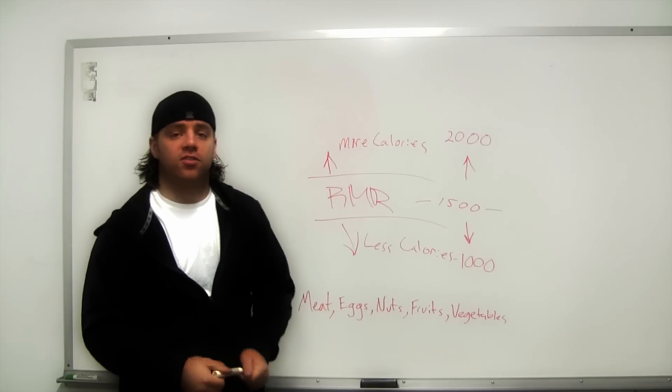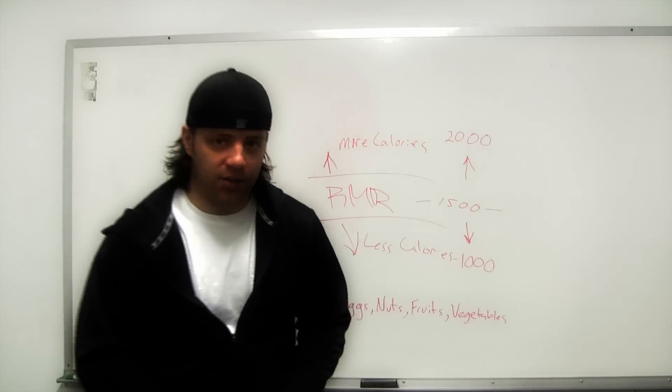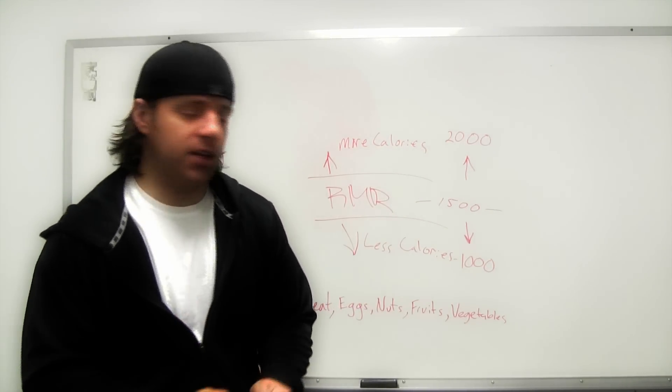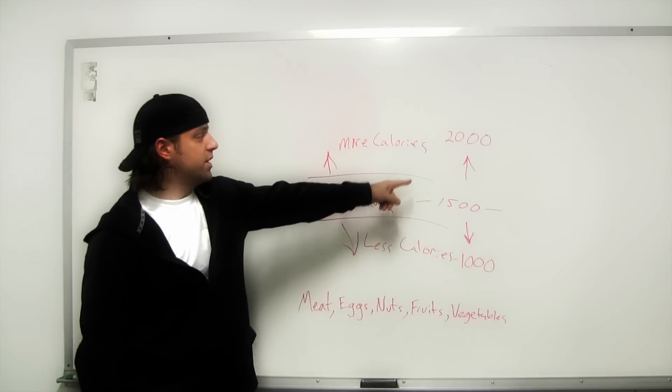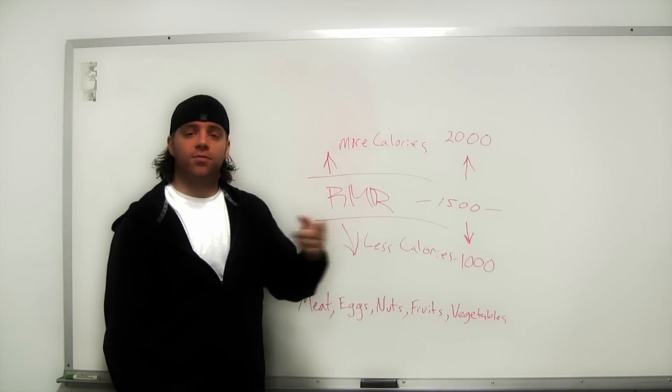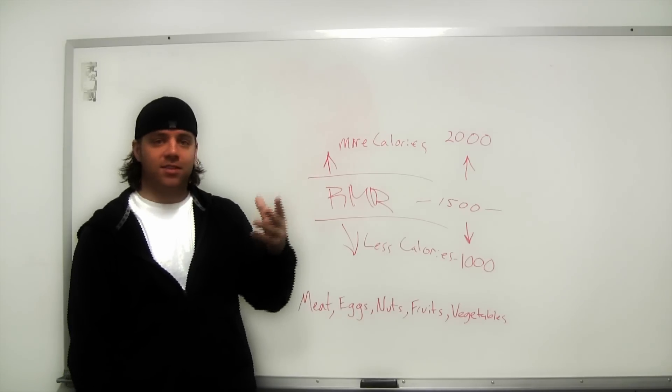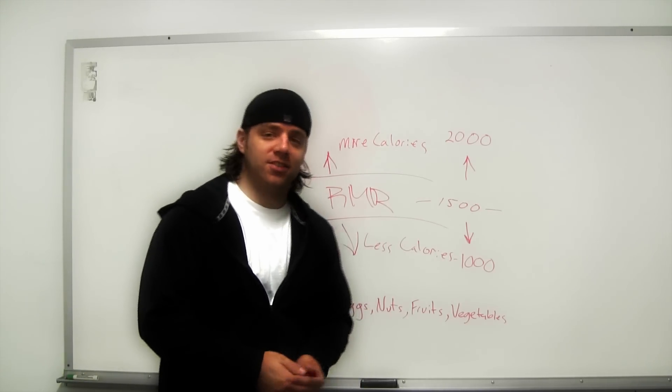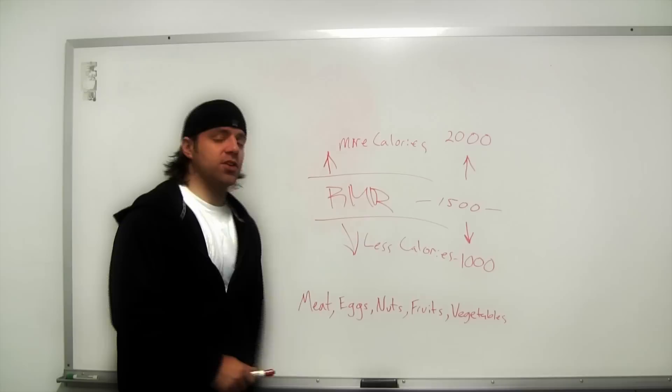If we want to gain weight, all we're going to do is add some calories on top of that resting metabolic rate. Really easy way to gain weight: add 500 calories a day. You add 500 calories a day, you're going to get results. So put yourself in a caloric surplus, you will get bigger.